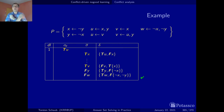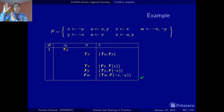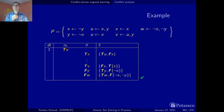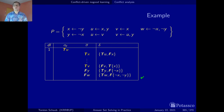Before we were in an area where x was false, and now we are in an area where x is true. So no flipping of the chosen literal anymore — just unit propagation does the job of throwing us into another part of the search space. That's it for this example.